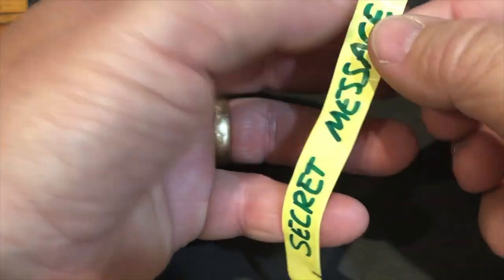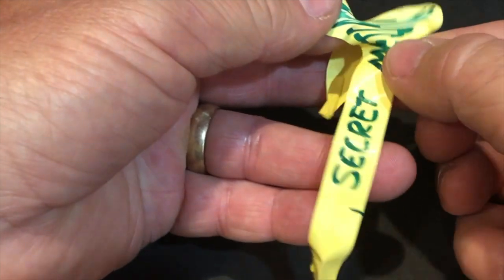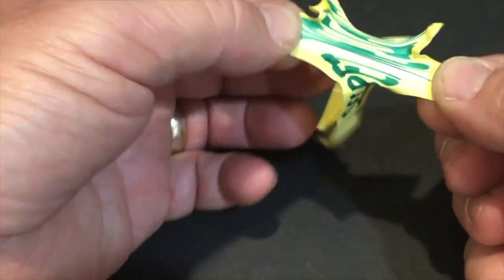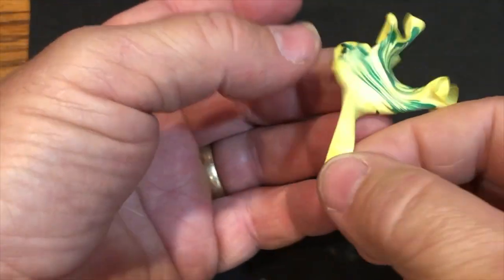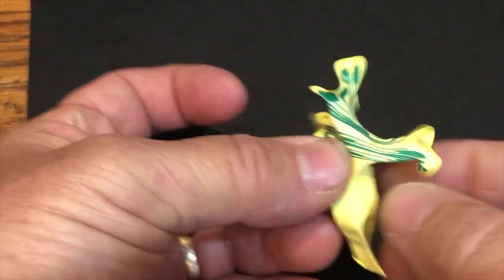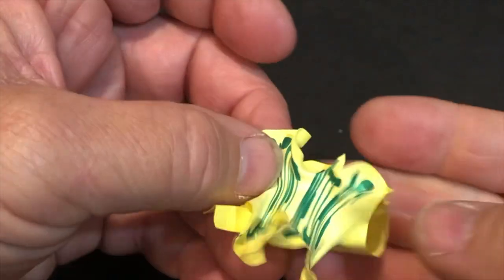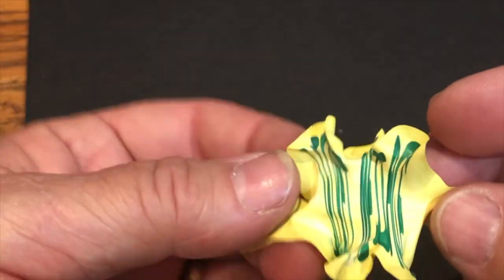So after you write down the secret message, now you're going to pull the sides out from the bottom and top, stretching the tape all the way out. So it distorts the message. Therefore, it's a secret message, because you have to know to pull it back to be able to reveal the message.